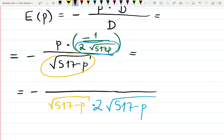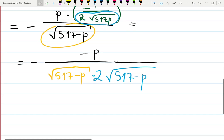Then negative 1 and p are in the numerator, so they should stay in the numerator. Now it's getting better because the square root times the square root means we have no square roots anymore. We're going to have just 2 times (517 - p).